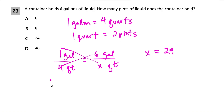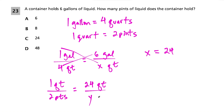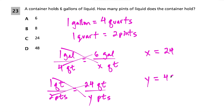Cross multiplying: 1 times y equals y, and 2 times 24 is 48. So there are 48 pints in 6 gallons. When setting up proportions, be consistent with your units — if you put gallons over quarts on the left, keep gallons over quarts on the right. So the answer is choice D, 48 pints.